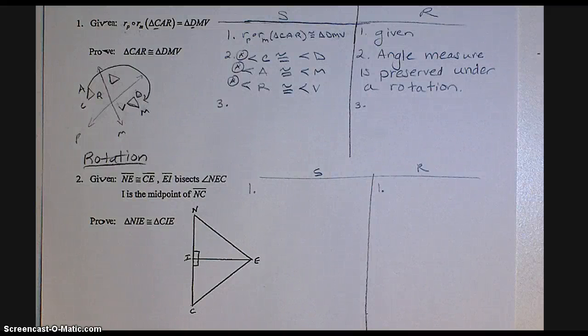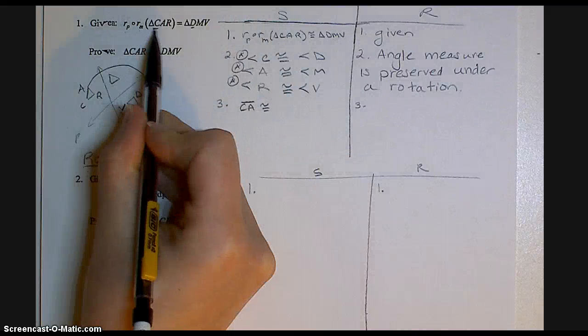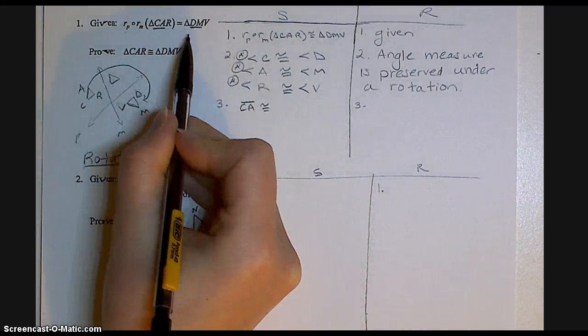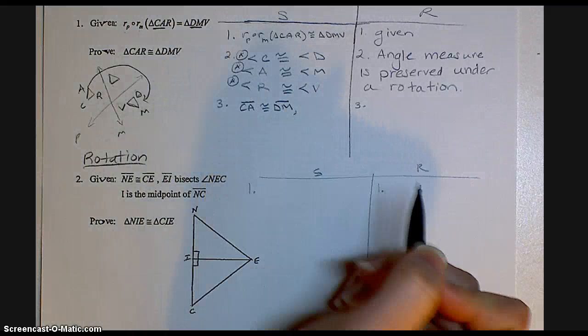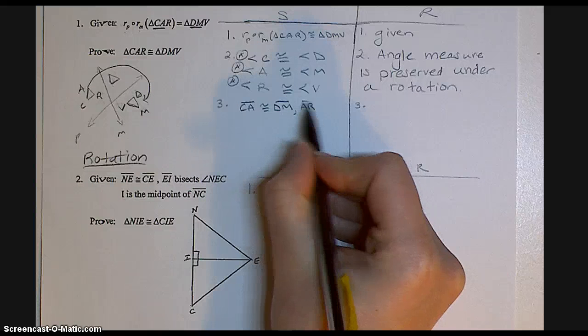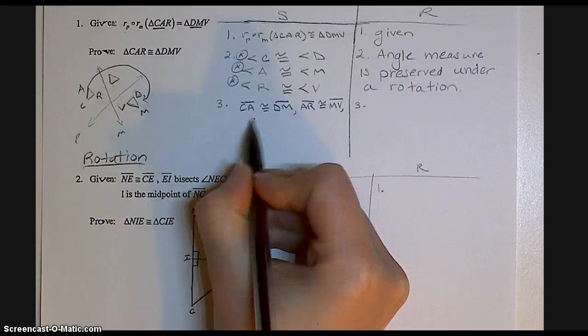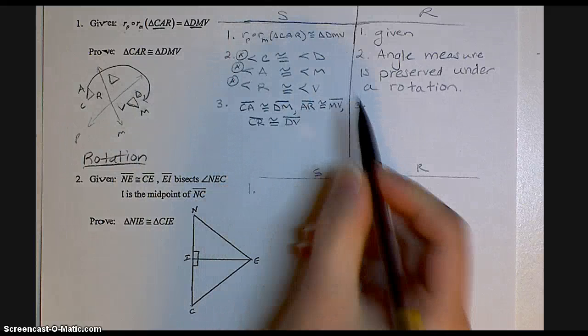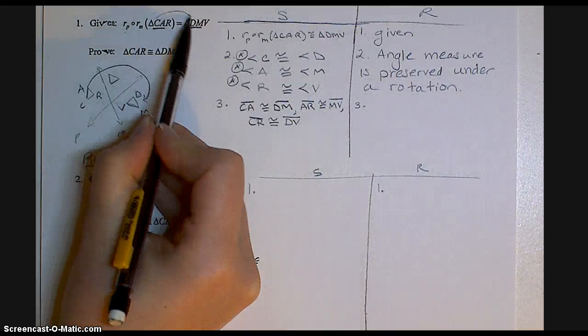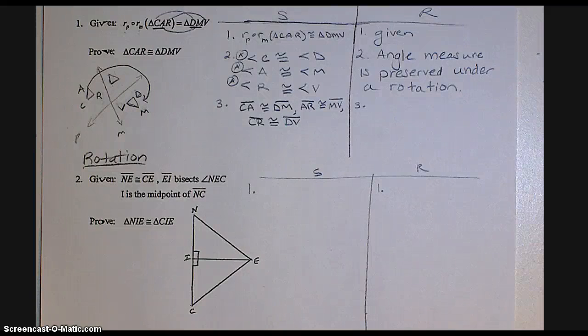Now we need to state that all three sides are congruent. So CA, because it's the first two letters, would correspond with DM. AR would be congruent to MV. And then lastly, CR would be congruent to DV. So I'm just matching up my letters according to their position in this congruency statement.